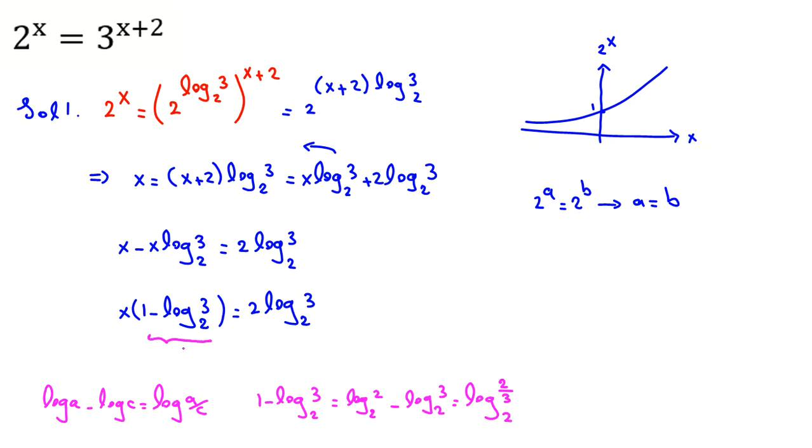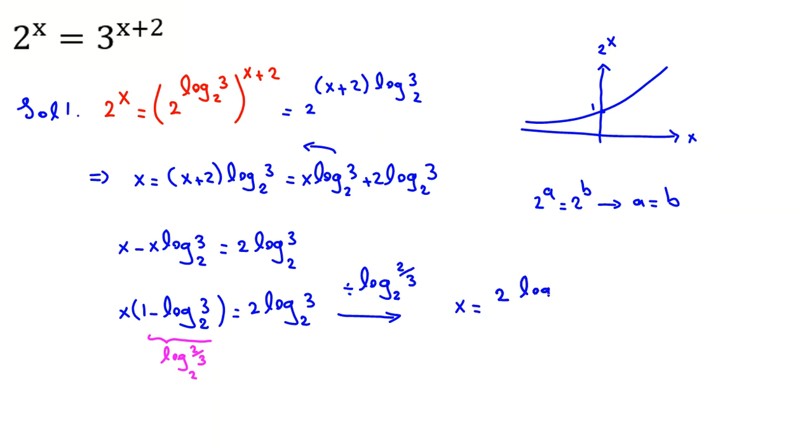So here it will be log of 2 over 3 in base 2. Now we can divide both sides by log base 2 of 2 over 3, and we can find x. It will be 2 log base 2 of 3 over log base 2 of 2 over 3. It was the first solution.